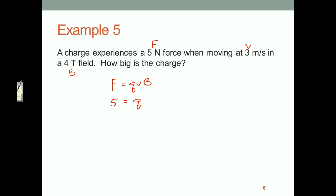Q is what we want to know. We have a 3 meters per second speed and a field of 4. So 5 equals 12q, or q equals 5 twelfths. If I divide that out on a calculator, that's 0.42 coulombs.